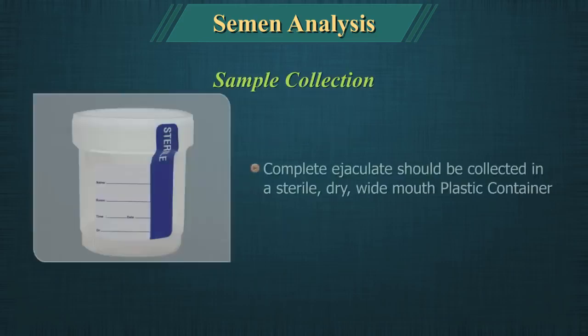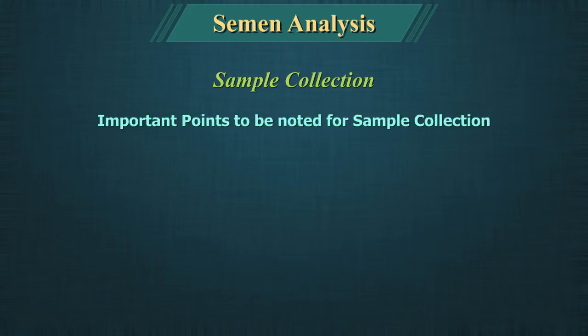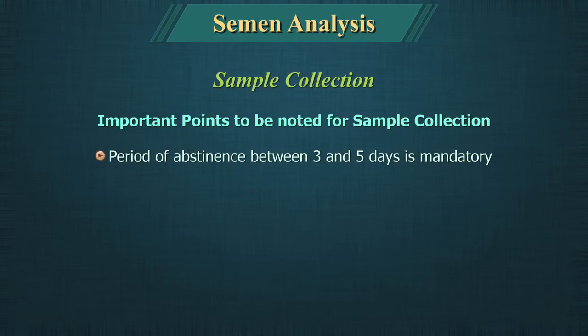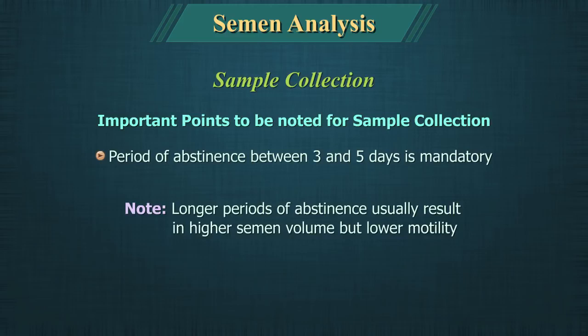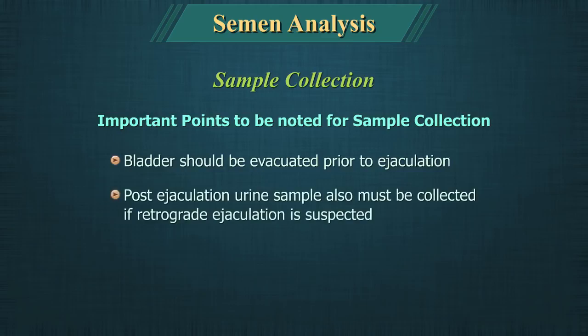Sample Collection: The complete ejaculate should be collected in a sterile, dry, wide-mouthed plastic container. A period of abstinence between 3 and 5 days is mandatory. Longer periods of abstinence usually result in higher semen volume but lower motility. The bladder should be evacuated prior to ejaculation. A post-ejaculation urine sample must also be collected if retrograde ejaculation is suspected.